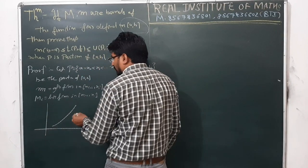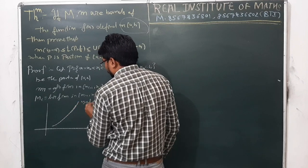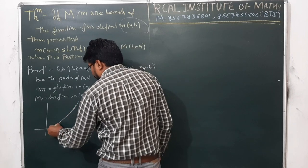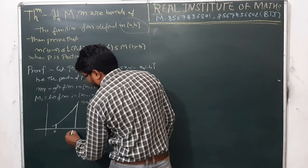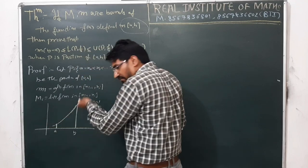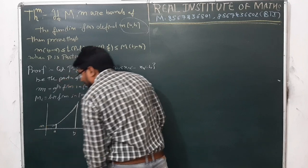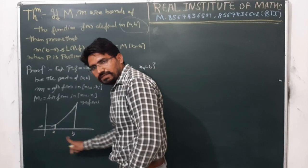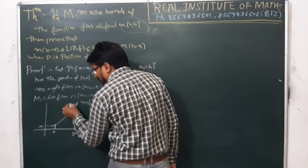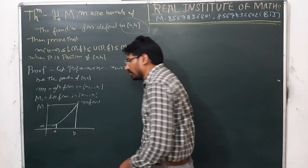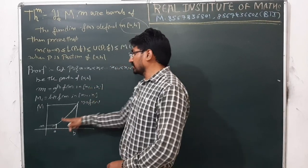Let us say this is the graph of the function, which gives us y = f(x). So here small m is the smallest value of the function within the interval [a,b], and capital M is the least upper bound — that is, the largest value or supremum of the function within the interval [a,b]. And for a sub-interval, this is mᵢ and this is Mᵢ.